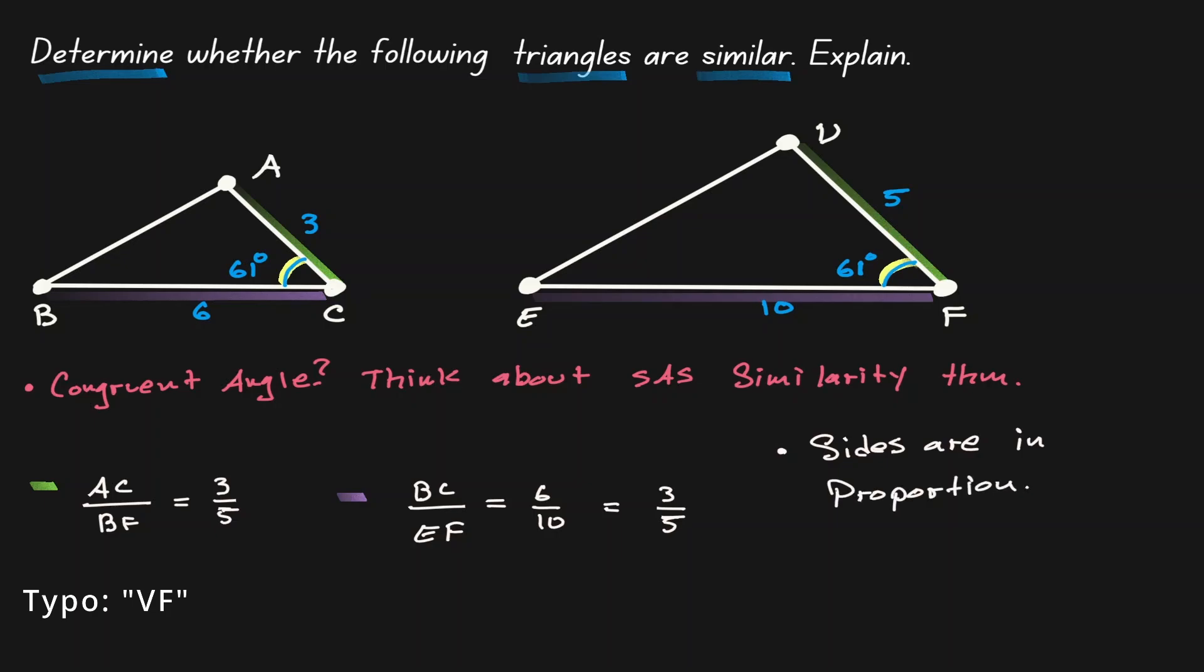Before we make our conclusion, I want to point out that when we are looking at this ratio, notice that the numerators AC and BC belong to the same triangle, and the denominators BF and EF belong to the same triangle. So we got to be careful with how we set up those ratios. There has to be an order. The numerators should come from line segments of the same figure, and the denominators should come from the same figure as well.